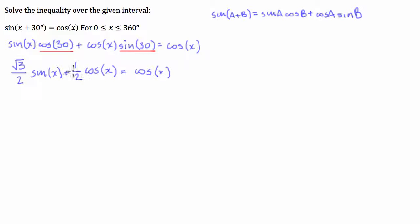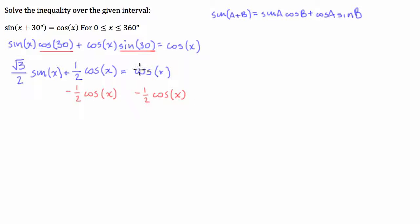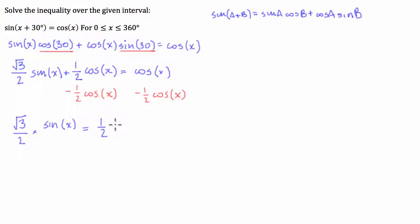Now I'm going to get all the cosines onto one side. I'll subtract one half cos x from both sides — on the right side they cancel, and on the left side, one minus a half is a half. So we're left with square root 3 over 2 times sine of x, equals one half times cosine of x.